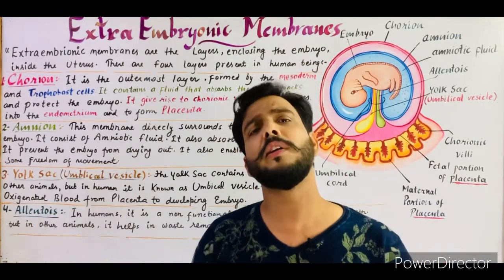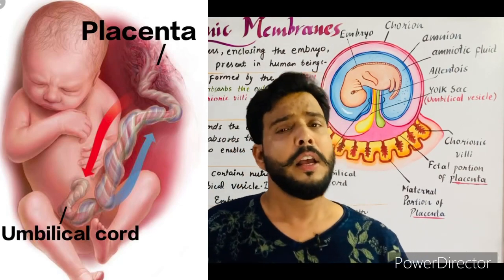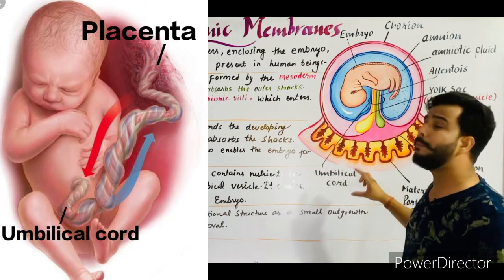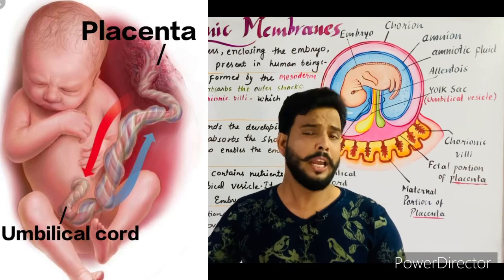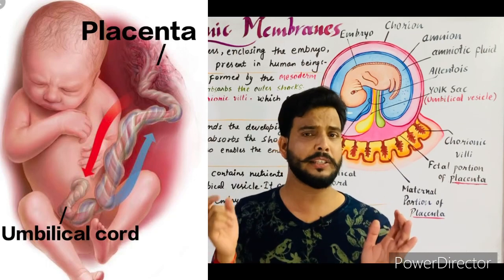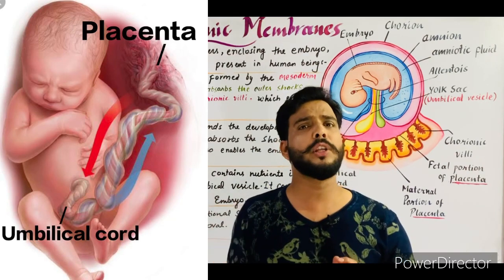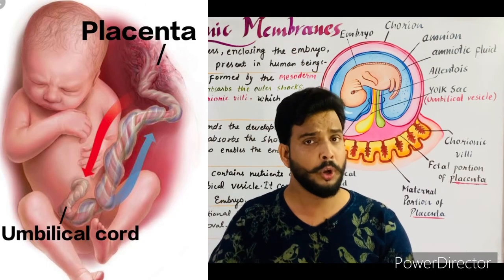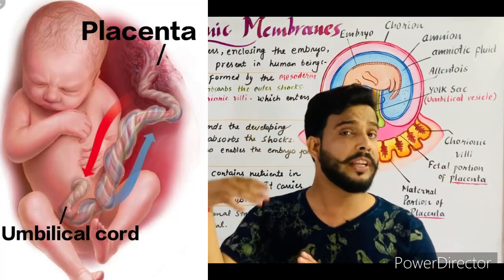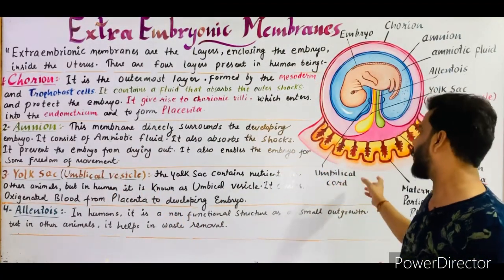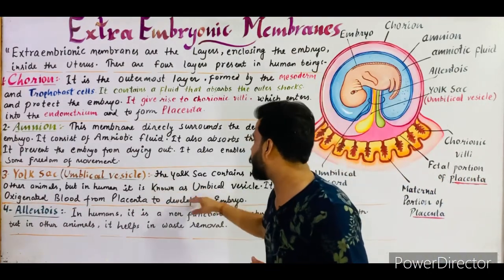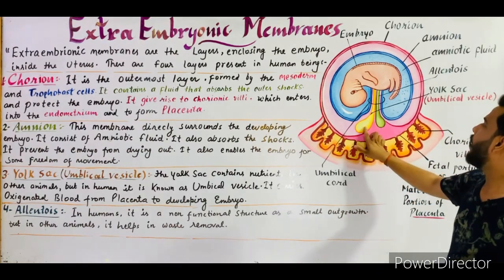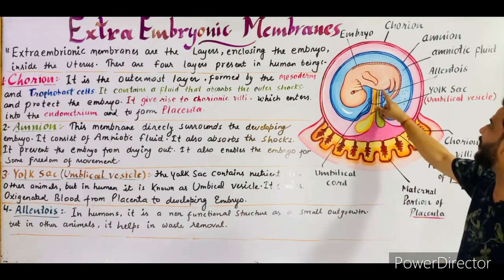The oxygenated (pure) blood is carried through the umbilical vesicle to the embryo. This structure is part of the umbilical cord — a rod-like structure attached to the embryo and the placenta, forming a connection between them. All nutrients and oxygenated blood are carried into the embryo through the umbilical cord, and all excretory waste such as CO2 is removed from the embryo through the same cord.